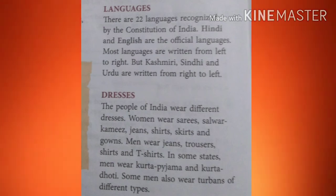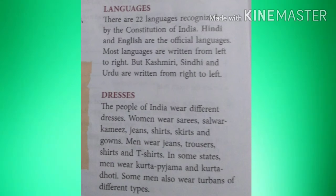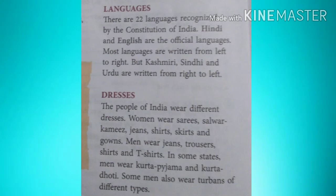Dresses: The people of India wear different dresses. Women wear sarees, salwar kameez, jeans, shirts, skirts and gowns. Men wear jeans, trousers, shirts and t-shirts. In some states men wear kurta pyjama and kurta dhoti. Some men also wear turbans of different types.